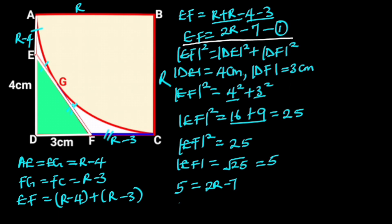Collecting like terms will give us 2R is equal to 5 plus 7. 5 plus 7 is 12, so 2R is equal to 12. Dividing through by 2 will give us R equal to 6 centimeters, which is the radius of the quarter circle.